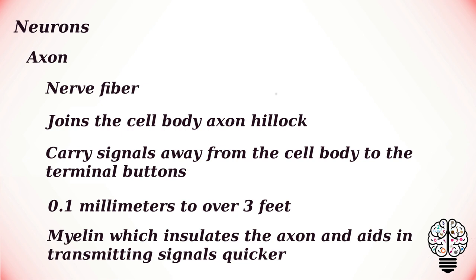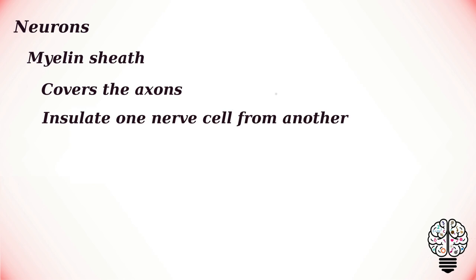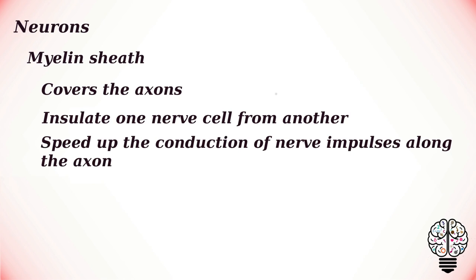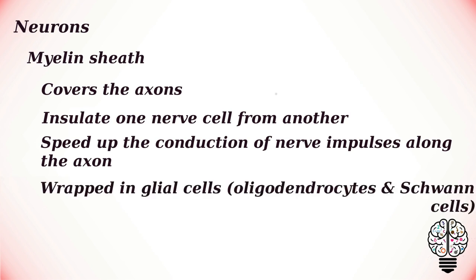Some axons are covered in a fatty substance called myelin, which insulates the axon and aids in transmitting signals quicker. Axons are large nerve processes that may branch off to transfer signals to many areas before ending at junctions called synapses. The myelin sheath is a layer of fatty material that covers the axons of neurons. Its purpose is to insulate one nerve cell from another and thus prevent the impulse from one neuron from interfering with the other. The second function of the myelin sheath is to speed up the conduction of nerve impulses along the axon.